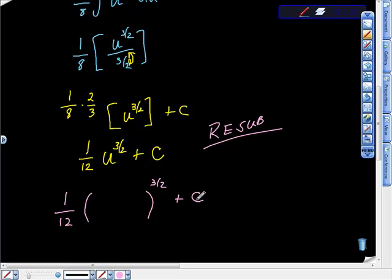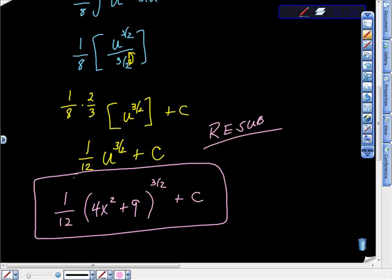Remember that we said early on that we set u equal to 4x squared plus 9. And here's our solution, all right?